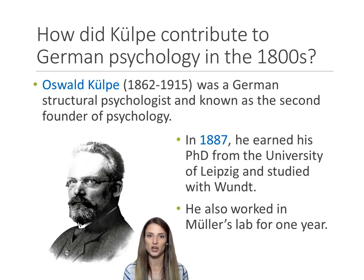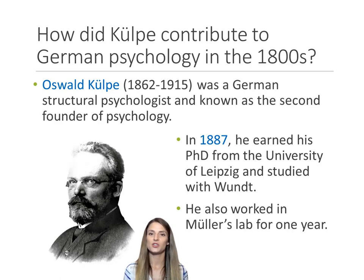The final German pioneer I'd like to talk about in this lecture is a man by the name of Oskar Kolpe. He was a German psychologist who is known by many historians as the second founder of psychology.